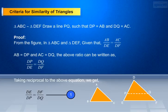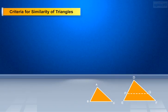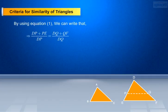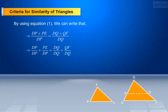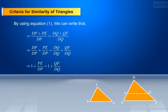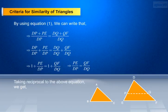Taking the reciprocal of the above equation, we get DE/DP equals DF/DQ — make it equation 1. By using equation 1, we can write (DP + PE)/DP equals (DQ + QF)/DQ. This implies DP/DP + PE/DP equals DQ/DQ + QF/DQ, which gives 1 + PE/DP equals 1 + QF/DQ. Taking the reciprocal, we get DP/PE equals DQ/QF — make it equation 2.